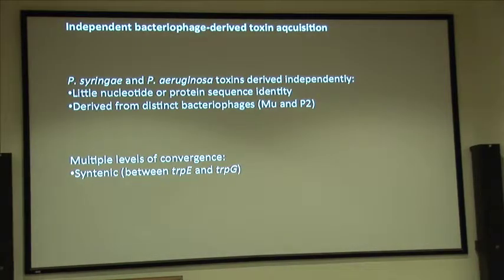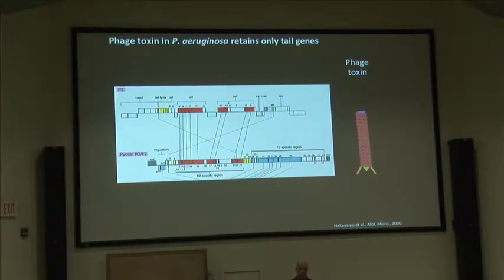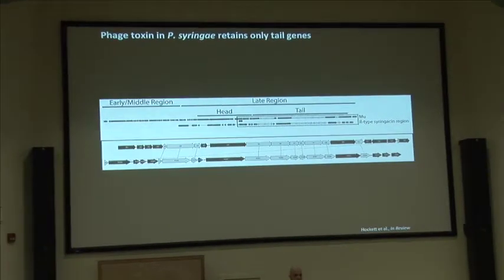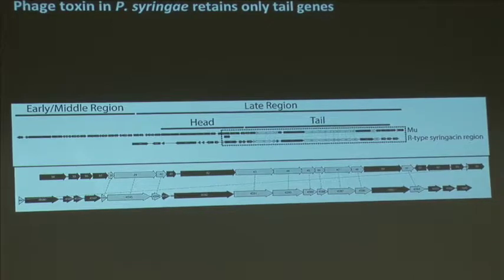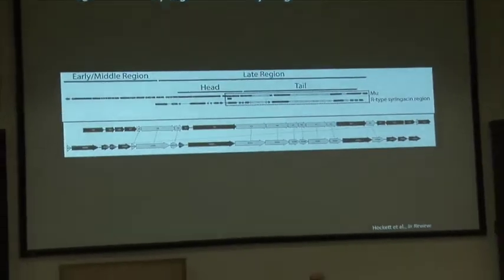So here we have multiple levels of convergence occurring. Both at the syntenic level, they're ending up within the same region within the genome of their respective bacterium. There's phenotypic convergence as well, where we've gone from a replicative bacteriophage to just the phage tail acting as a selective toxin. And there's genomic convergence: for the pyocin in Pseudomonas aeruginosa, only the genes necessary for tail morphogenesis were retained going from a P2-like progenitor to the phage toxin. The same is true for Pseudomonas syringae—comparing the genes retained in this toxin region back to bacteriophage Mu, only those genes associated with the tail are retained.